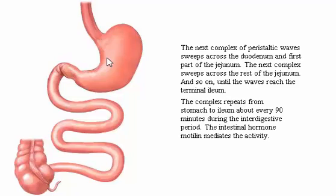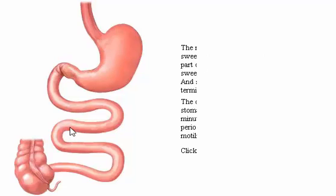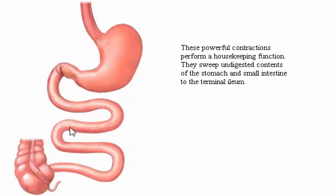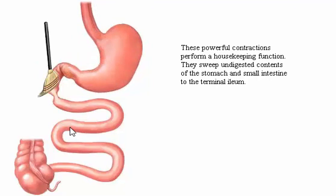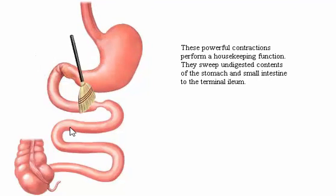The intestinal hormone motilin mediates the activity. These powerful contractions perform a housekeeping function — they sweep undigested contents of the stomach and small intestine to the terminal ileum.